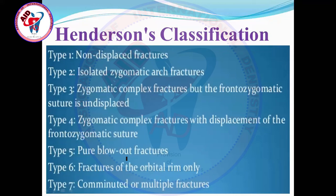If the orbital roof fractures — the bone of the anterior cranial fossa or the roof of the orbit — and comes down into the orbital cavity, this is called a blow-in fracture. Type 6 in Henderson's classification is fractures of the orbital rim only, and type 7 is comminuted, multiple, maximally displaced fractures.